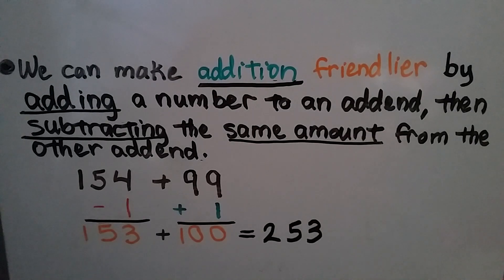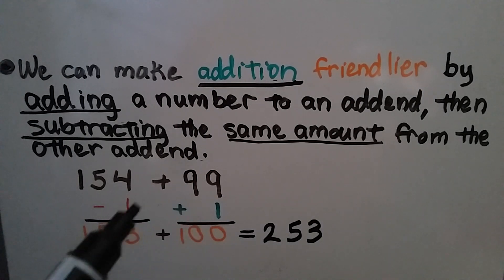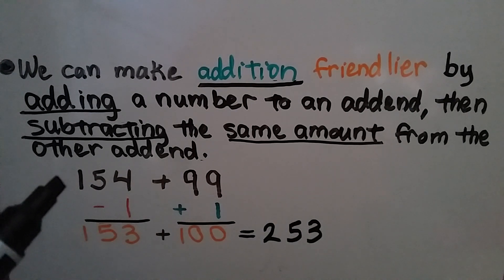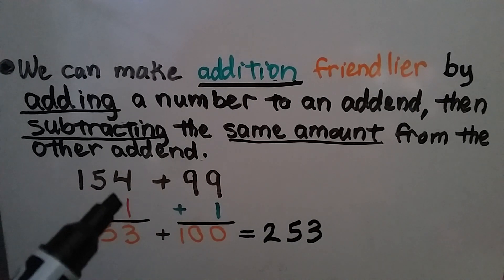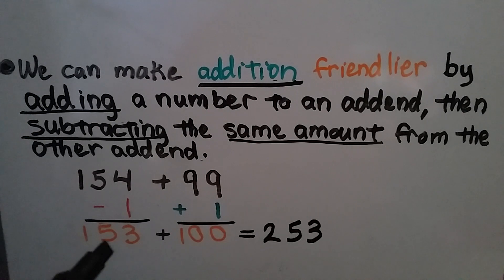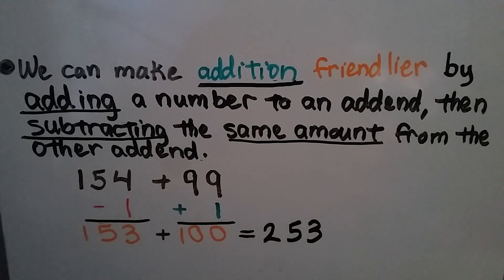We can make addition friendlier by adding a number to an addend and subtracting the same amount from the other addend. For example, if we need to add 154 plus 99, we can take 1 away from the 154 and give it to the 99. Then we'll be adding 153 plus 100, which we can do easily mentally as 253.